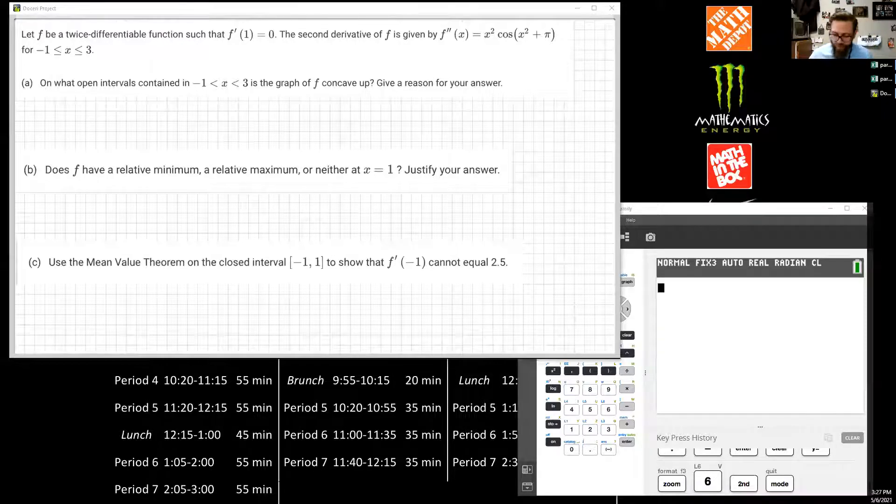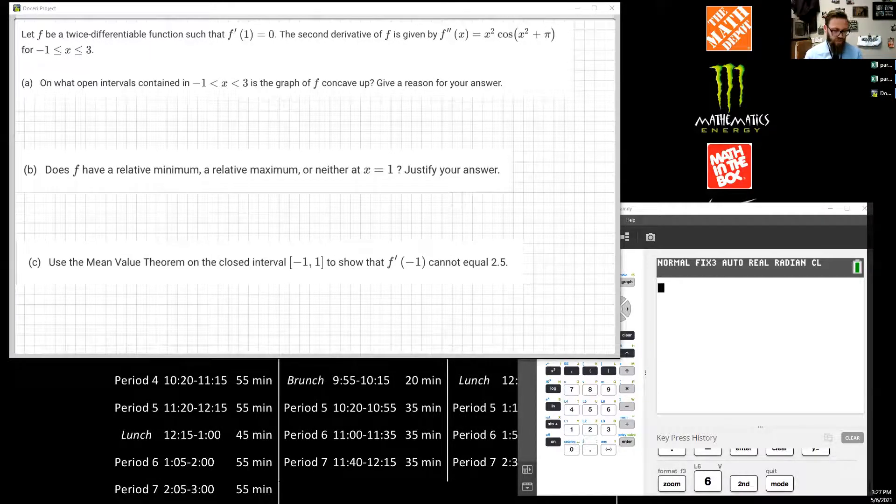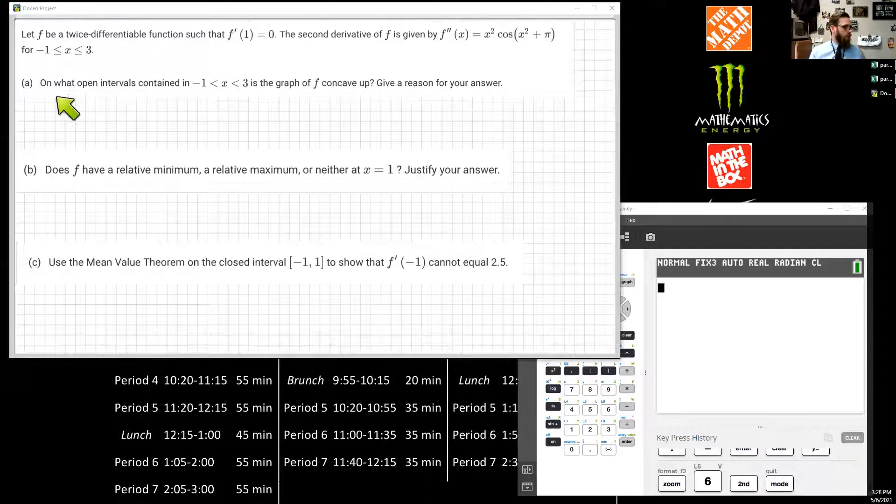Unit 5, FRQ, Part B. Alright, so let's get busy on this guy. Got my arrow here, I'm pointing. Alright, this is good.